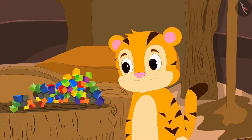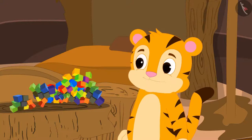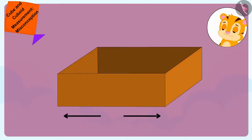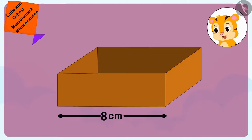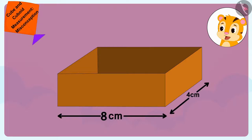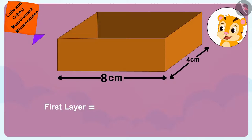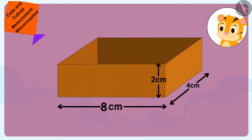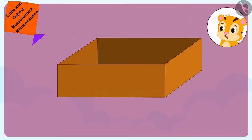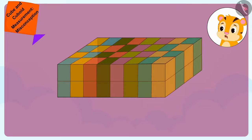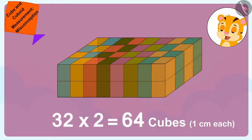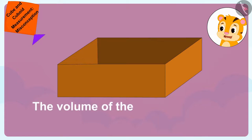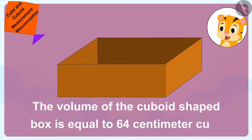It is not necessary that the volume of the cube shape is always less than the volume of the cuboid. The length of this cuboid shaped box is 8 cm and the width is 4 cm. This means that the first layer of this cuboid shaped box will have length into width — 8 times 4 — 32 cubes of dimension 1 cm each. Its height is 2 cm, meaning there would be 2 such layers. We will be able to place a total of 32 times 2, 64 cubes of dimension 1 cm each in the cuboid shaped box. In other words, the volume of the cuboid shaped box is equal to 64 cm cubed.